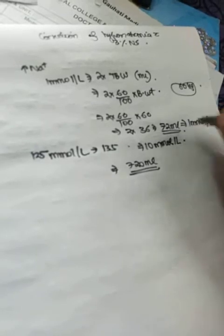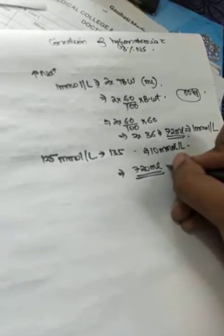So how much of the 3% NS will you require? You will require 72 into 10, that is 720 ml, to increase it by 10 millimole per liter.